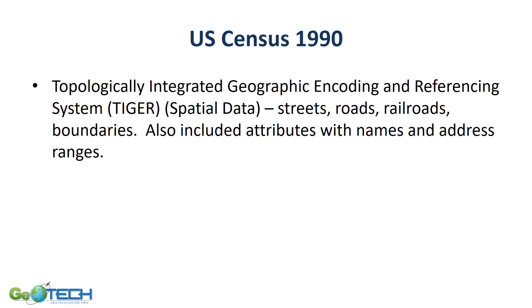In the 1990 census, one of the great deliverables emerged: the Topological Integrated Geographic Encoding and Referencing System, otherwise known as TIGER. This was the first country-wide digital spatial data set, covering streets with names and address ranges, railroads, and boundaries. It became the foundation for website directions — things like MapQuest and Google Maps were built on this type of platform.